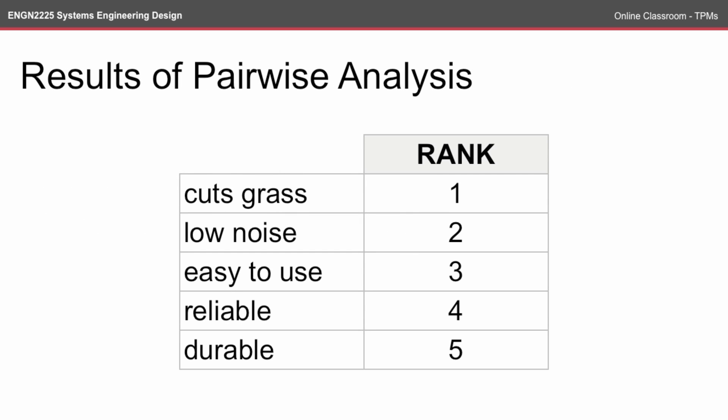From the last online classroom, we had the ranks from the pairwise analysis, and that showed that 'cuts grass' was the most important, and that 'reliable' and 'durable' came in fourth and fifth. So we're going to use these top five to develop into design attributes.